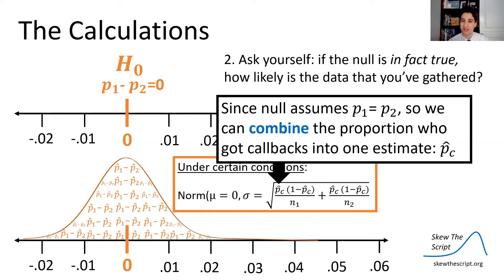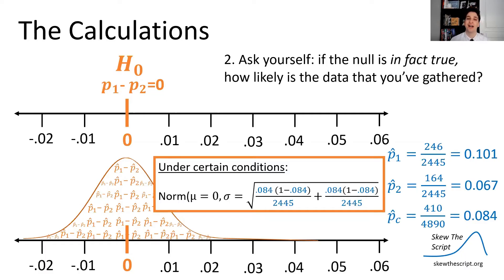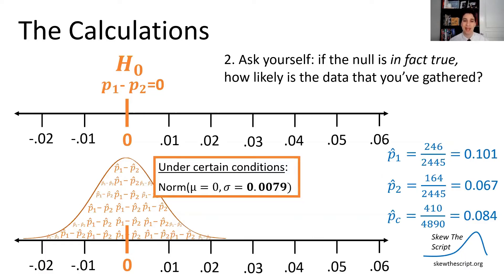So let's go through the calculations just to see how that looks. So the proportion of the commonly white name group that got a callback was 10.1%. The proportion of the commonly black name group that got a callback was 6.7%. So combined, if you add up all the people who got callbacks regardless of race, among all the resumes that got sent out regardless of race, you find that proportion is 0.084. So that's the combined proportion we're going to use in our sampling distribution. And we put in the sample sizes we got as well, and we get this normal curve with a standard error of 0.0079.